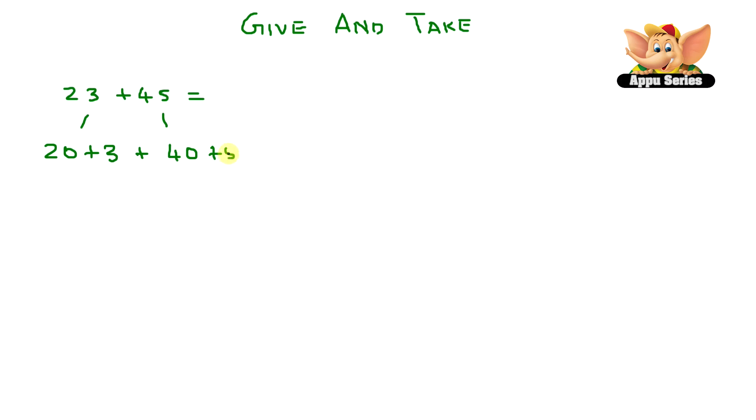So 3 plus 5 equals 8. And 20 plus 40 equals 60. Therefore, we have 23 plus 45 equals 68. That was super fast, wasn't it?